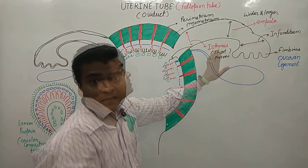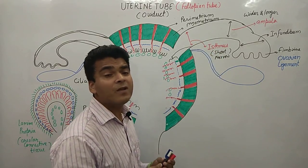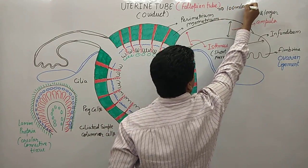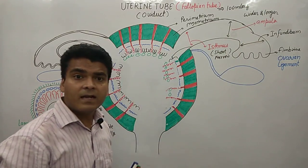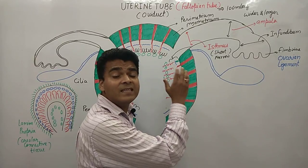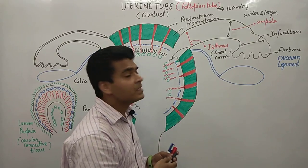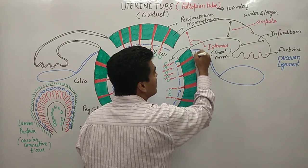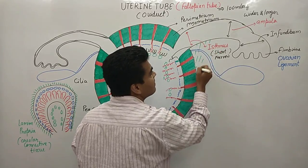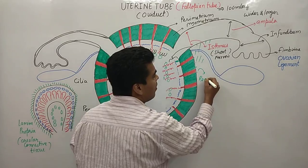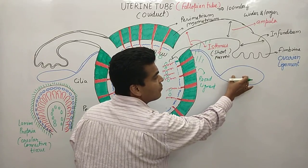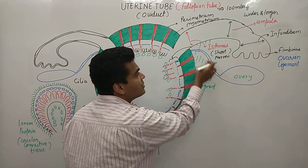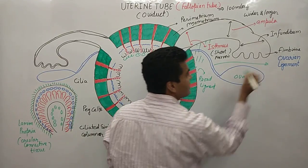The fallopian tube is 10 centimeters long. The fallopian tube lies within the folds of the broad ligament. This portion is known as the broad ligament, this portion is the ovary, and the blue color portion is known as the ovarian ligament.